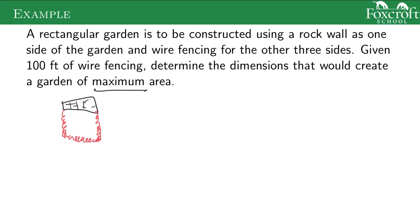The rectangular garden has two dimensions — an x dimension and a y dimension. This would also be y, and this would also be x, because it's a rectangle. We're going to maximize the area of the garden. The area is x times y — it's a rectangle, so you just multiply the two things.